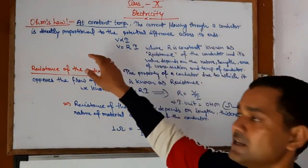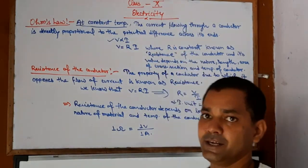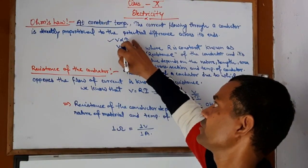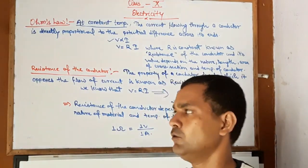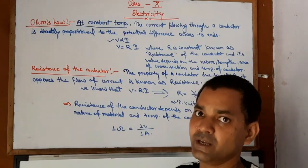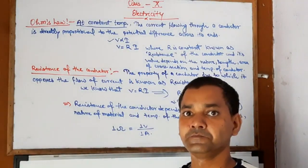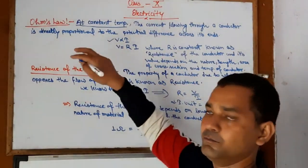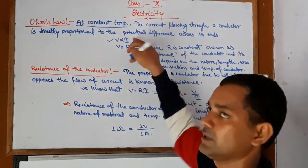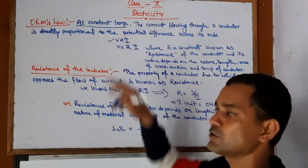Current flowing through a conductor — what is written here is explained in words. Potential difference is directly proportional to the current. You should know this. If not, first watch my first video on Electricity. V means potential difference and I means current here. So V is directly proportional to I.